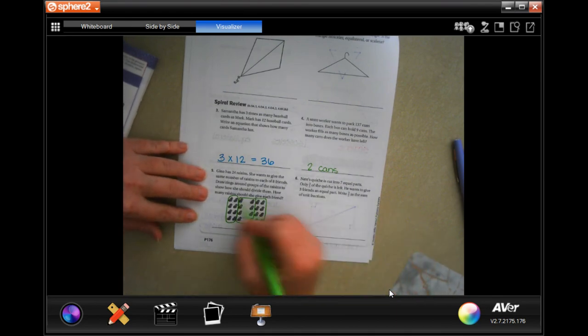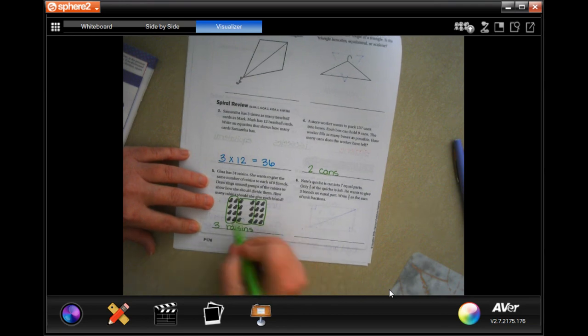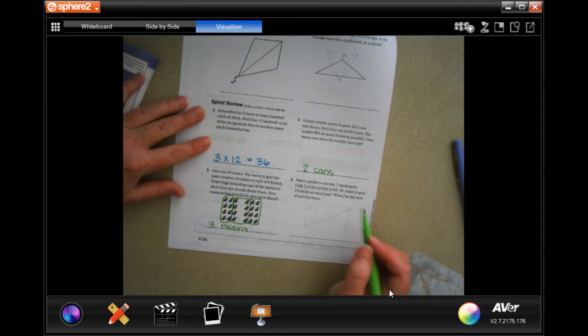So each friend would get three raisins because there are three groups of eight.